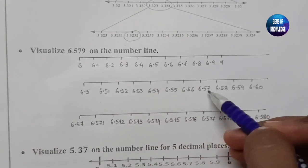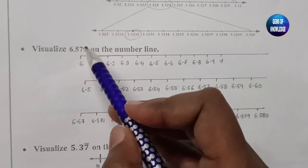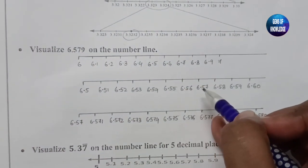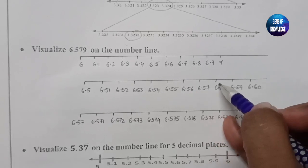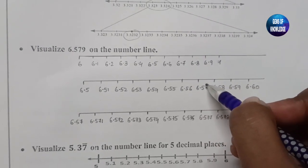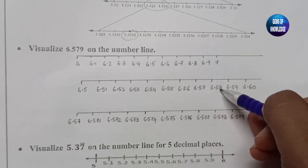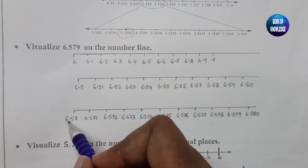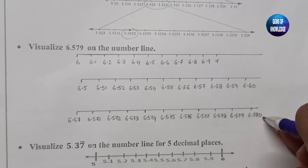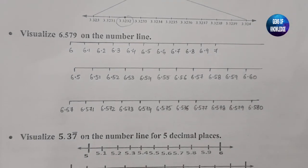We need 6.579, so we take 6.57 and 6.58 since 6.579 lies between these two numbers. We expand this section again, zooming in between 6.57 and 6.58.